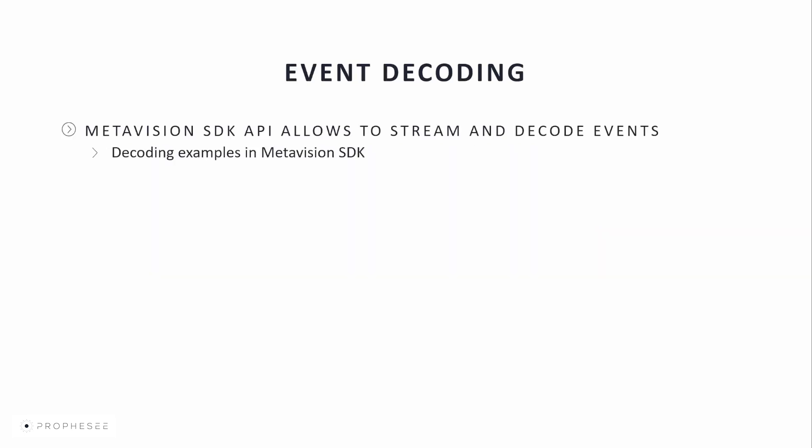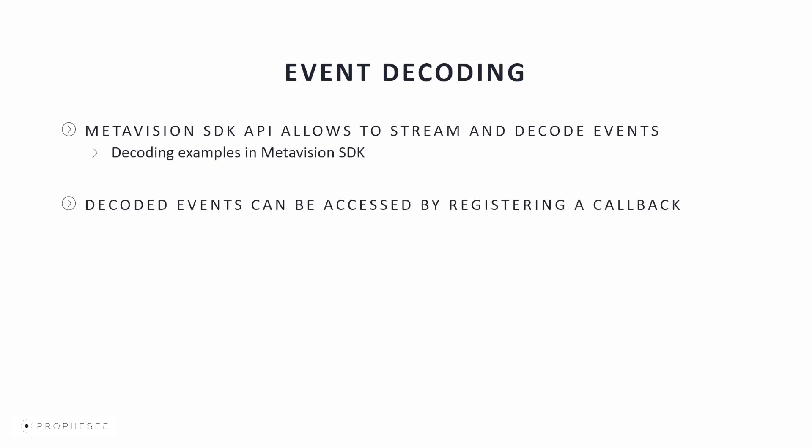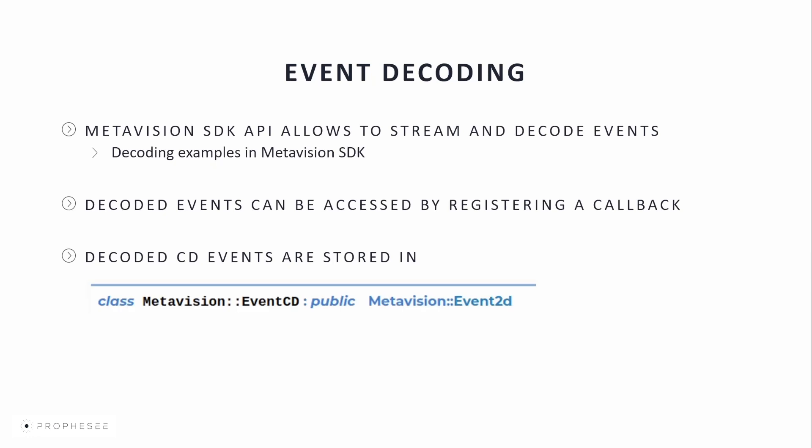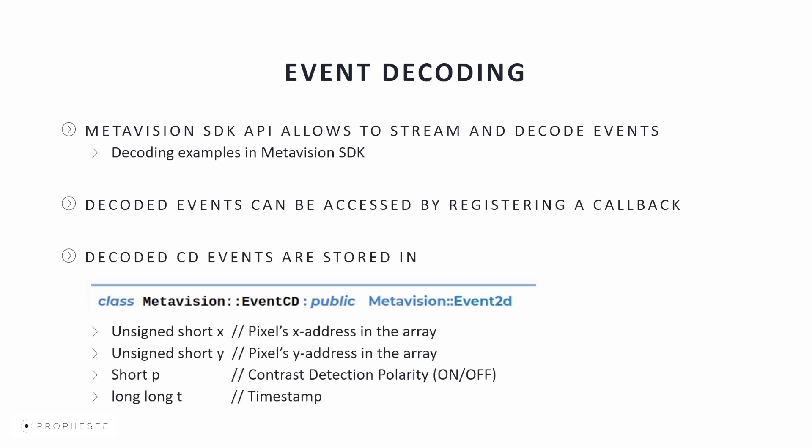Encoded events streamed by the camera can be decoded within the MetaVision SDK. The decoded events can be accessed by registering a callback. Many components of MetaVision, in addition to the streaming and decoding, work using callbacks. For this, we'll need to create a function that will be called automatically whenever a buffer of events is ready to be processed. Decoded CD events are stored using the MetaVision EventCD class with the following parameters: X and Y are used for the pixel address in the sensor array; P stores contrast detection polarity — polarity equals 1 for on events and 0 for off events; and T stores the timestamp.